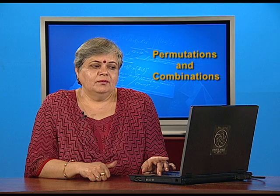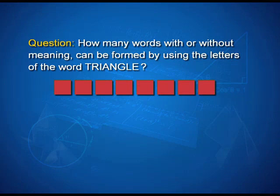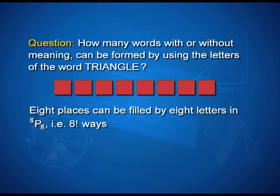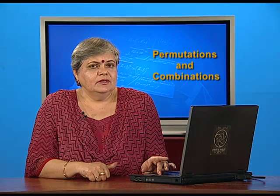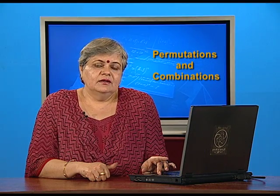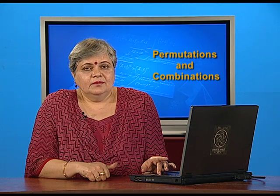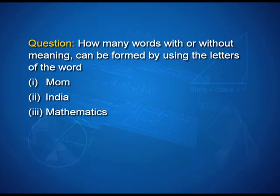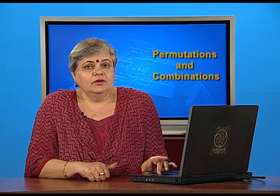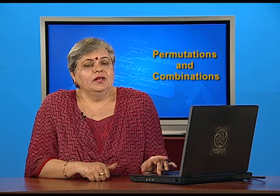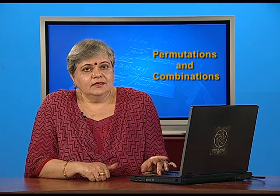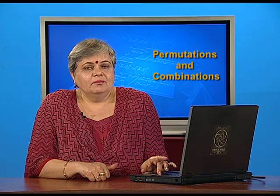Using this result, we could find the number of ways the letters of the word 'triangle' may be arranged, giving rise to words which may not have meaning. We saw there were 8 letters that can be arranged in 8P8, that is 8! ways, with or without conditions like vowels together, consonants together, or words starting with T or ending in E. But what about words like 'mom', 'India', or 'mathematics'? Will finding the number of arrangements be different? I think yes.